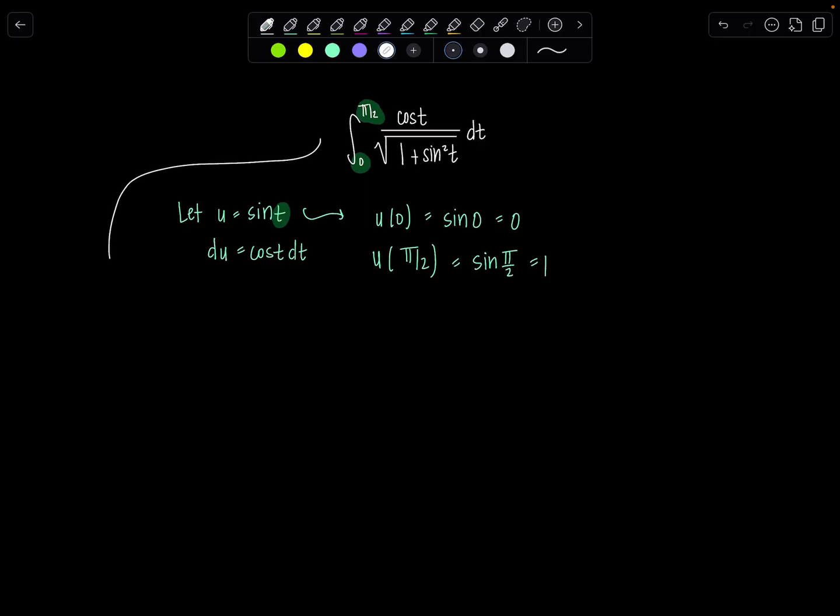So now let's rewrite our integral entirely in terms of u. So we'll go from 0 to 1 and then this is lovely right here. This cosine t dt, that's just du, beautiful, over square root and then this is 1 plus u squared. How are we doing? Okay good.